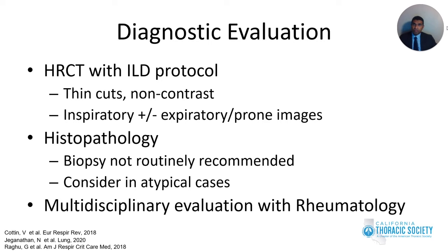Diagnostic evaluation of patients with interstitial lung disease should include a high-resolution CT scan with ILD protocol — thin cuts typically less than one millimeter, non-contrast preferred since contrast can give the appearance of ground glass opacities. Patients should have an inspiratory scan, and if indicated, expiratory and prone images can also be helpful. Prone images help rule out dependent atelectasis, and expiratory images help evaluate for bronchiolitis or air trapping.